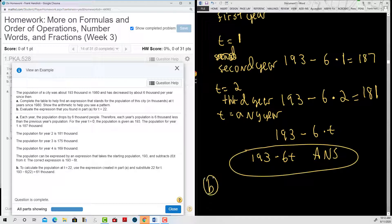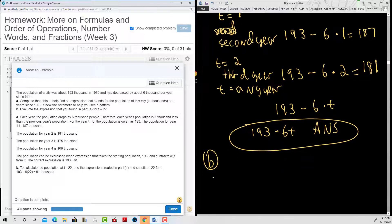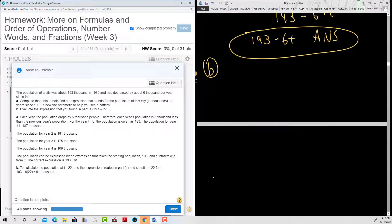Part b comes next. So they want us to evaluate the expression for t equal to 22, so we have 193 minus 6t, and they let t equal to 22.